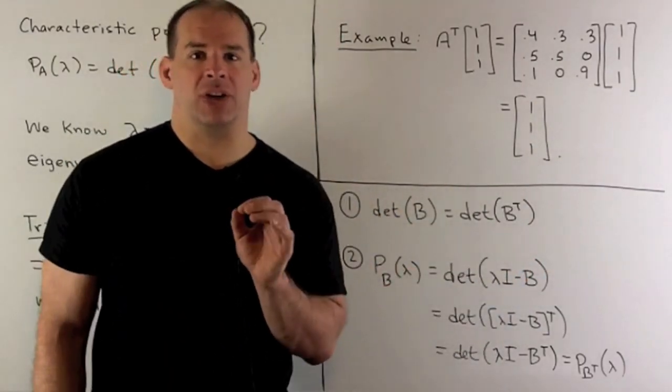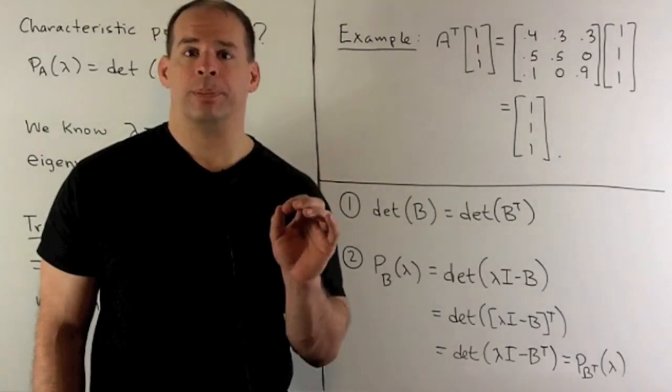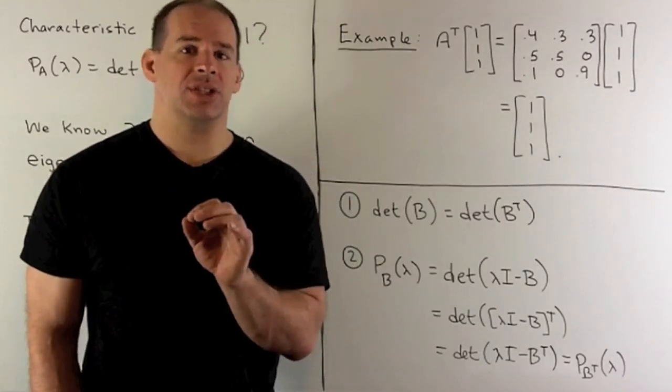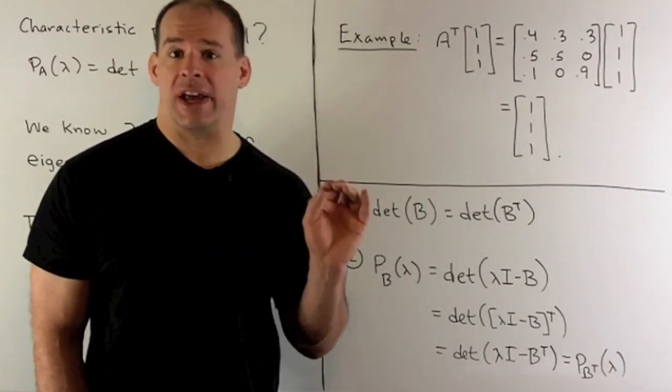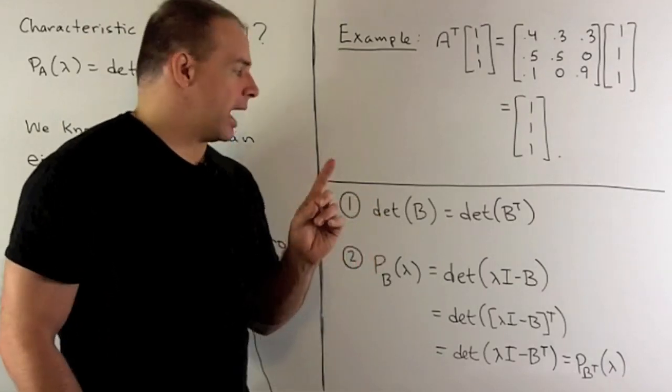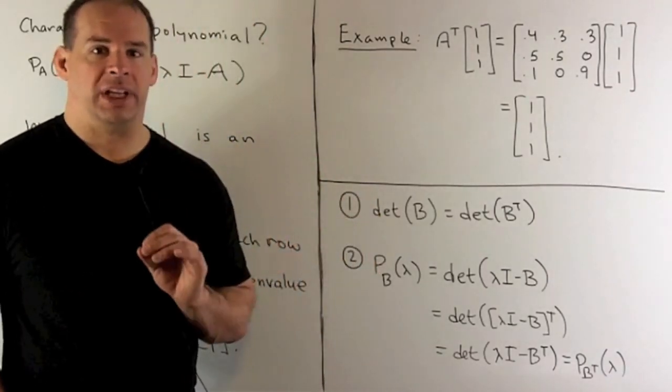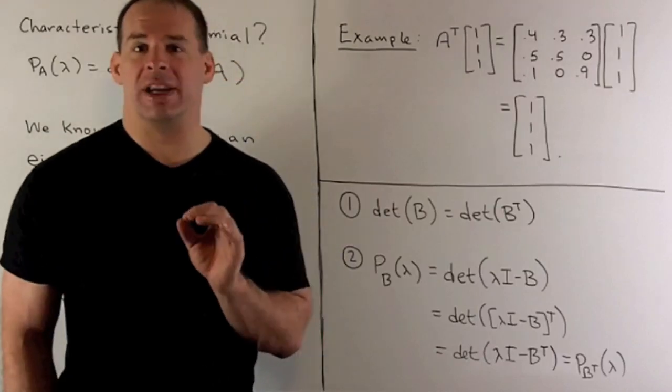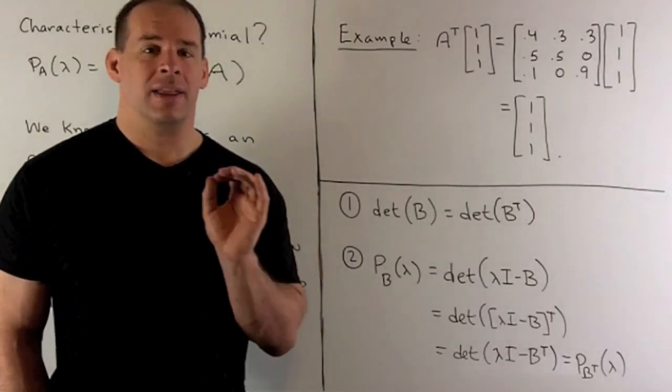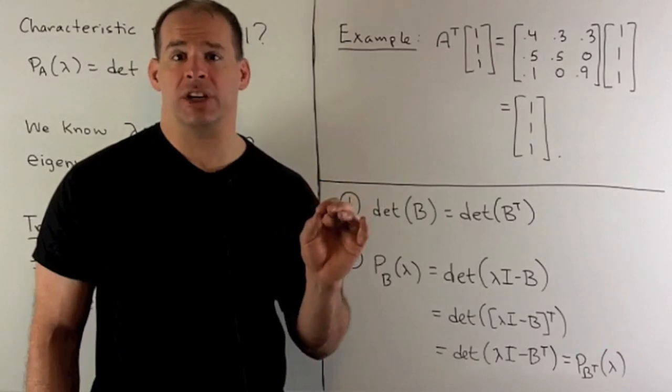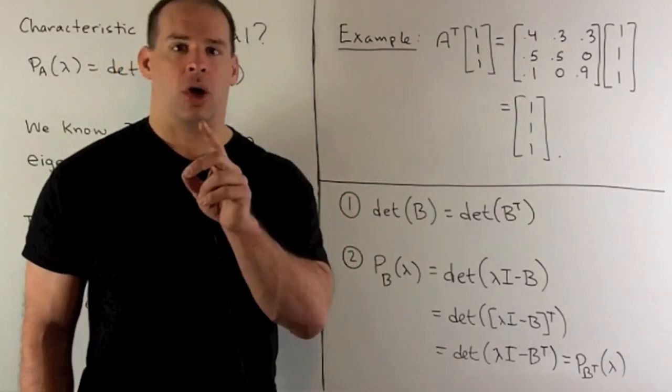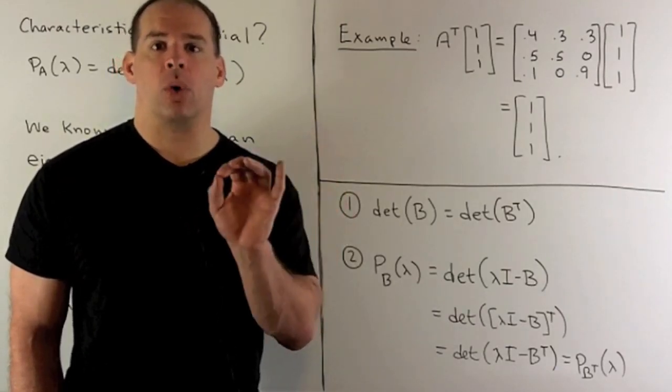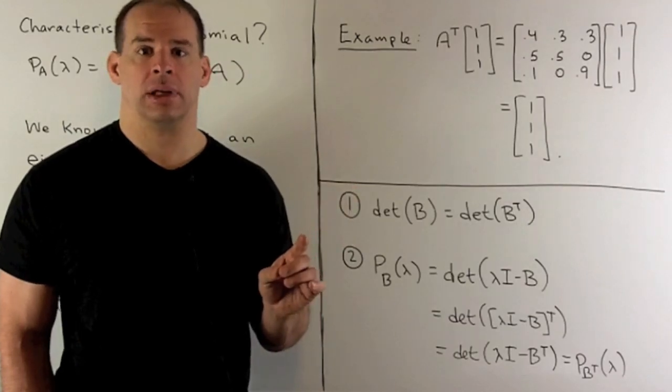To see why a transition matrix always has eigenvalue equal to 1, I just need to show, with our trick, that the eigenvalues for a matrix are going to be the same as the eigenvalues for the transpose of a matrix. To do that, we have two things we'll need to show. First thing, we want to know that the determinant of a matrix is equal to the determinant of the transpose of a matrix. That we can see if we consider what's happening in the cofactor expansion. If you work it out, an expansion along a row, for the transpose, it's going to be the same expansion, but now going down a column. The numerical work will be exactly the same.